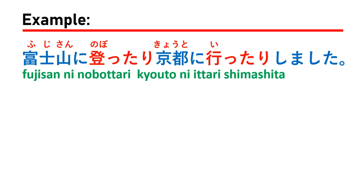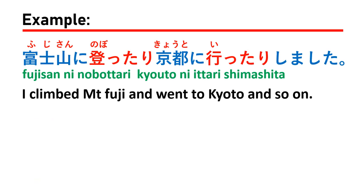Now let's see some sample sentences on how to use the structure. The first sample is: 富士山に登ったり京都にいたりしました, which means 'I climbed Mount Fuji and went to Kyoto, and so on.'